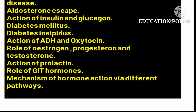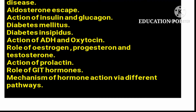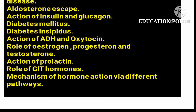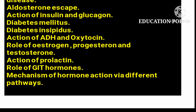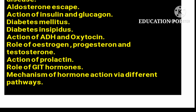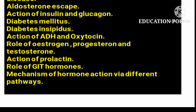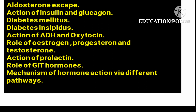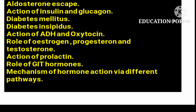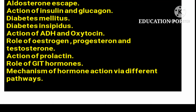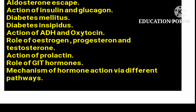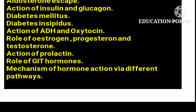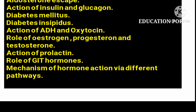The next important topic is the role of GIT hormones, which you will study in GIT physiology. These include gastrin, secretin, and cholecystokinin (CCK). You must remember their roles and names in order to write about the role of GIT hormones.